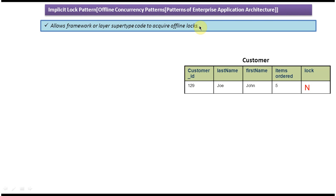To explain this implicit lock design pattern I have taken a customer table. It has five columns: customer ID, last name, first name, items ordered, and lock. It has only one row — customer ID is 129, last name is Joe, first name is John, items ordered is five, and lock is null.